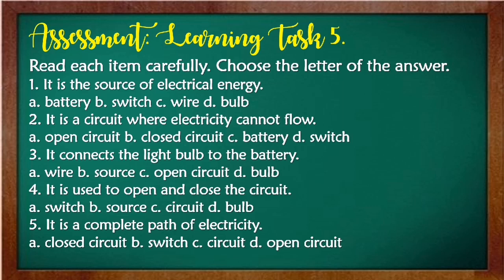And in our last part learning task, read each item carefully. Choose the letter of the correct answer. Number one: It is the source of electrical energy. A. battery, B. switch, C. wire, D. bulb. Number two: It is a circuit where electricity cannot flow. A. open circuit, B. closed circuit, C. battery, D. switch. Number three: It connects the light bulb to the battery. A. wire, B. source, C. open circuit, D. bulb. Number four: It is used to open and close the circuit. A. switch, B. source, C. circuit, D. bulb. Number five: It is a complete path of electricity. A. closed circuit, B. switch, C. circuit, D. open circuit. Write your answers in your papers.